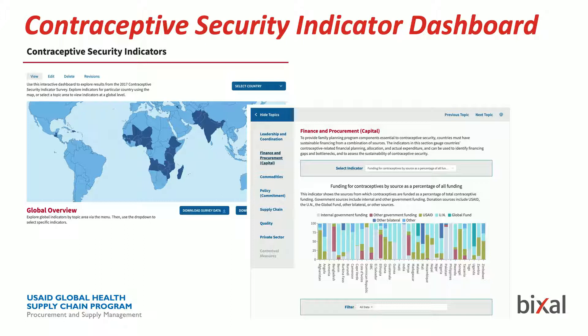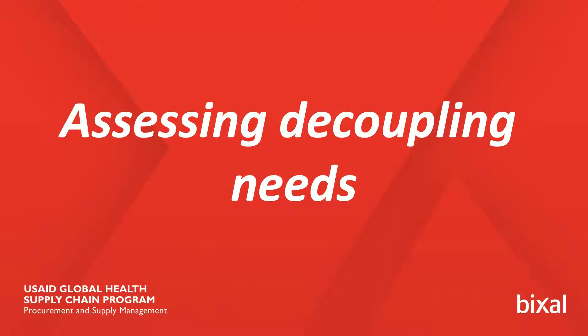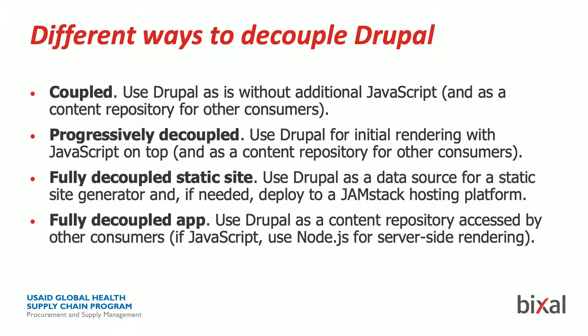First, we asked ourselves: do we really need to decouple this? As you might know, there are different ways to decouple Drupal. A coupled or monolithic approach means using Drupal for everything — the display of data, the content editor experience — everything in Drupal. Progressively decoupled means using a lot of Drupal to display most static information, but injecting small web apps into certain regions whenever you need more interactivity to enhance the experience.